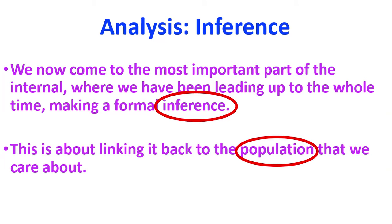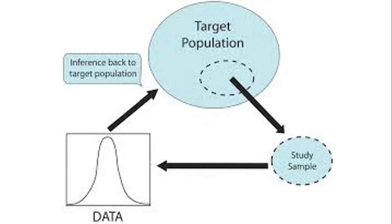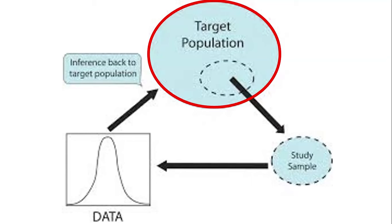Making an inference is about linking it back to our population. Here's a diagram to try and explain that. We start by having a target population of people that we're interested in. From that target population, we take a sample rather than a census — time, money, all of those are good reasons why we only take a sample.